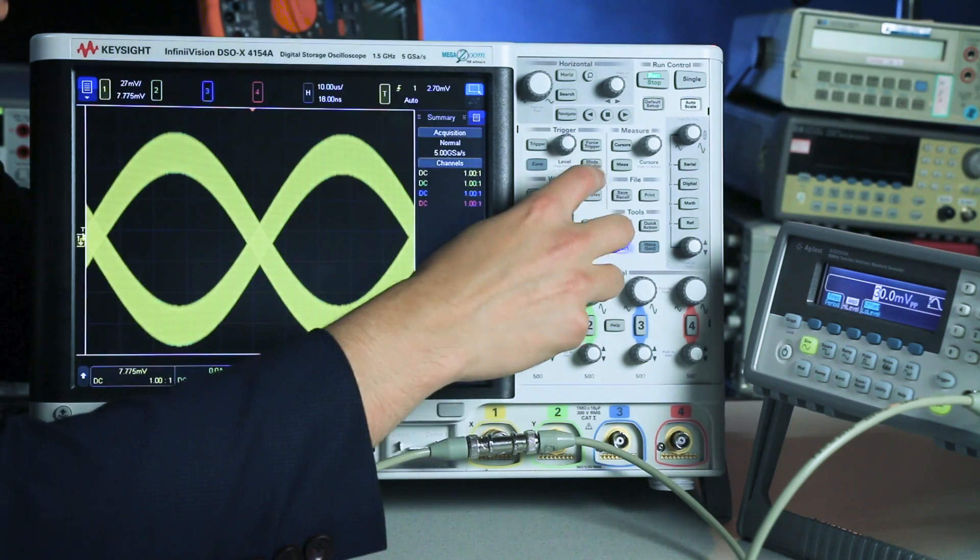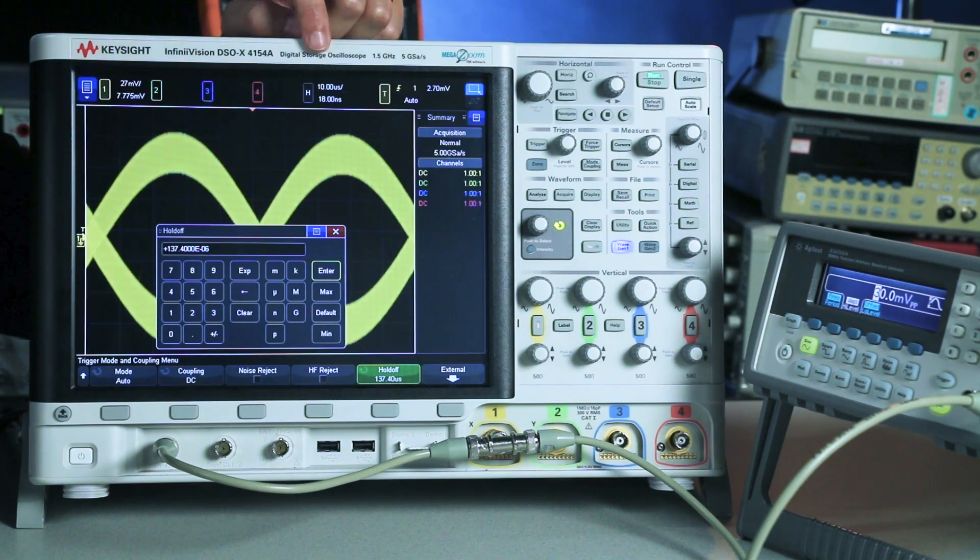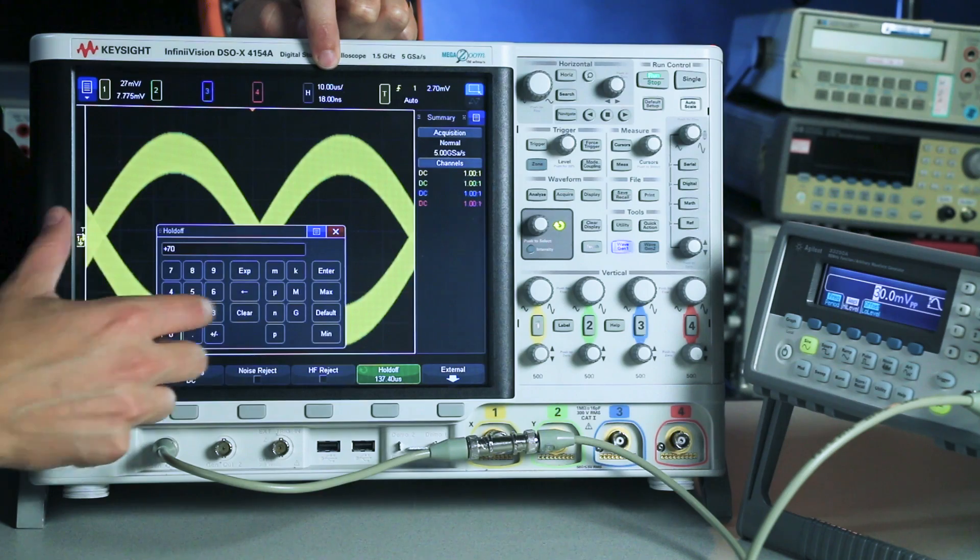So to trigger on that better, you can go into mode coupling in your trigger menu and adjust your trigger hold off. And I'm at 10 microseconds per division, so I'm just going to set my hold off for something like 70 microseconds. And now I'm going to get a stable waveform.